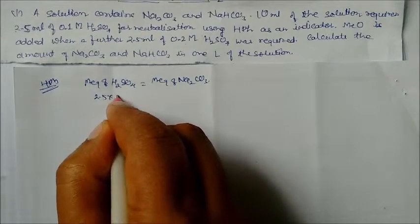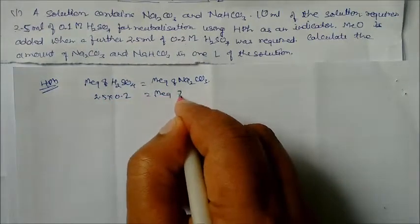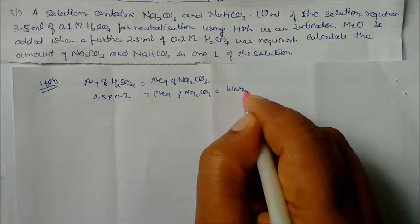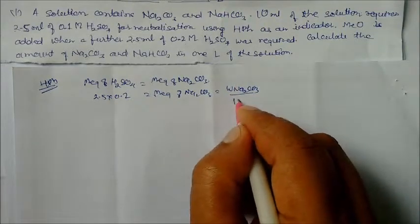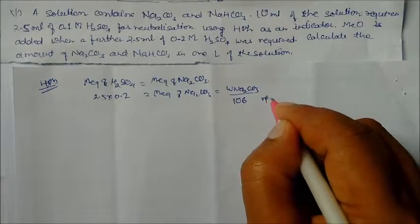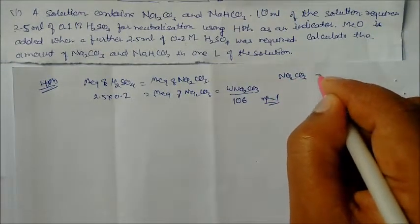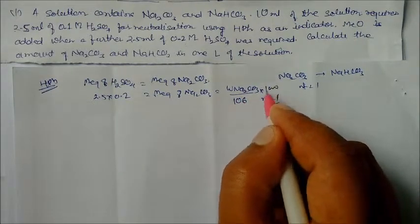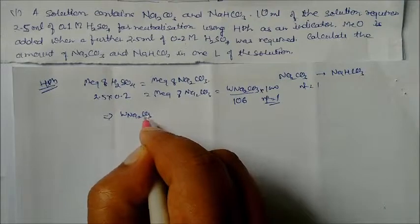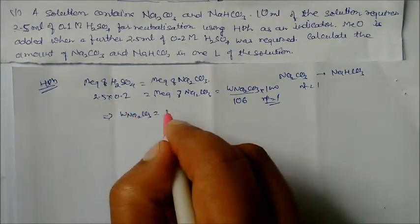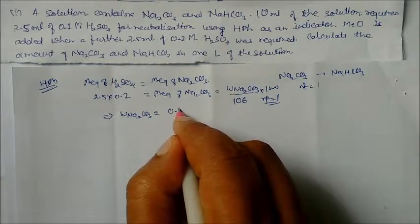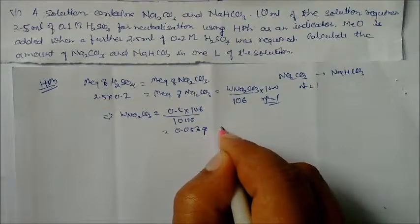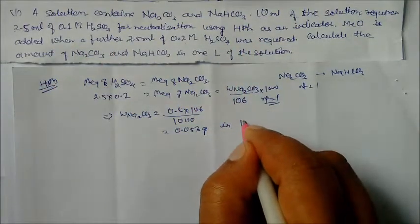Milliequivalents of H₂SO₄ = 2.5 × 0.2 (since H₂SO₄ has n-factor 2, molarity 0.1 × 2 = 0.2 N) = milliequivalents of Na₂CO₃. With n-factor 1 (converting to NaHCO₃), equivalent weight of Na₂CO₃ = 106. Weight of Na₂CO₃ = 0.5 × 106 / 1000 = 0.053 grams in 10 ml.